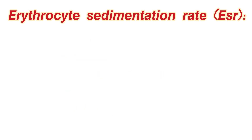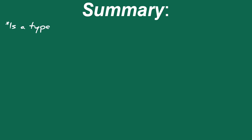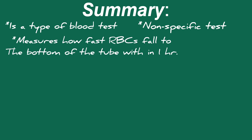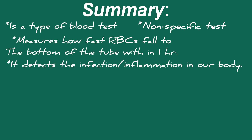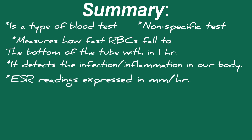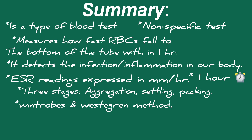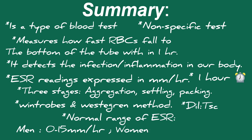To summarize: erythrocyte sedimentation rate is a type of blood test and a non-specific test. There are three stages — aggregation, settling, and packing — and the overall process takes one hour. Two methods are used: Winthrobe and Westergren. The difference is that Westergren uses extra dilution with trisodium citrate. Normal range: men 0–15 mm/hr, women 0–20 mm/hr.